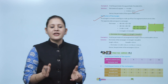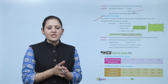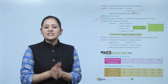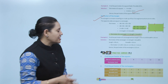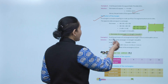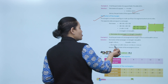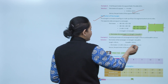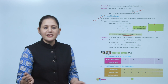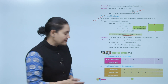Example: find the perimeter of the rectangle whose length is 40 centimeters and breadth is 16 centimeters. Perimeter of rectangle equals 2 into (L plus B). Putting the values: 2 into (40 plus 16) equals 112 centimeters.